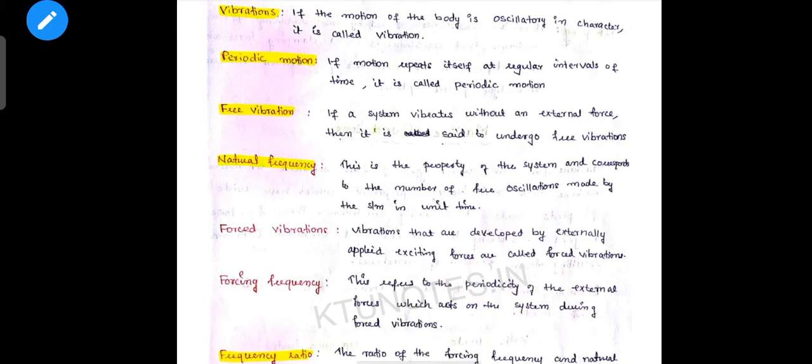Natural frequency: this is the property of a system and corresponds to the number of free oscillations made by the system per unit time. The system's natural frequency relates to the vibration of the body.